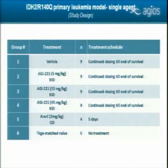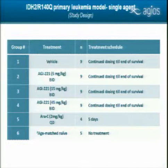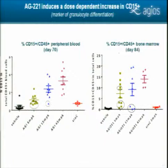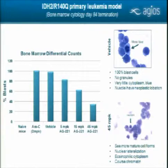We used AG221 in a single-agent dose efficacy study at 5, 15, or 45 mg/kg BID, compared to a low-dose ara-C standard of care. The survival curve showed a beautiful dose-dependent survival benefit, with animals at the highest dose achieving 100% survival compared to vehicle or ara-C-treated animals. When we looked at bone marrow, we see a dose-dependent increase in CD15-positive differentiation markers in both peripheral blood and bone marrow. Animals that died in the low-dose group failed to go through this differentiation. Differential count confirmed dose-dependent decrease in blasts, and histology showed maturation of blasts into mature neutrophils.